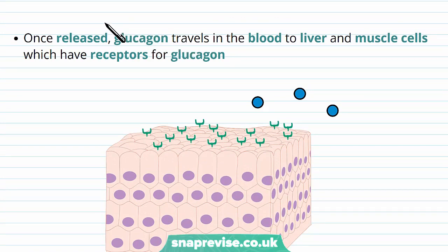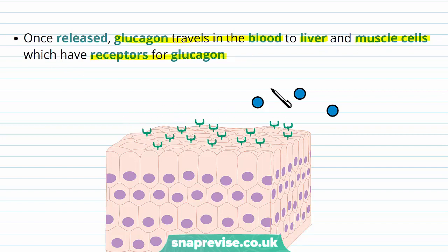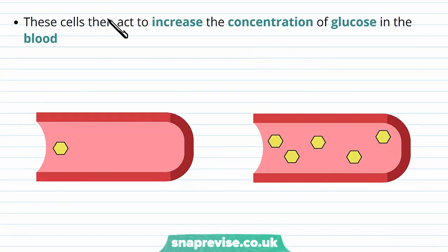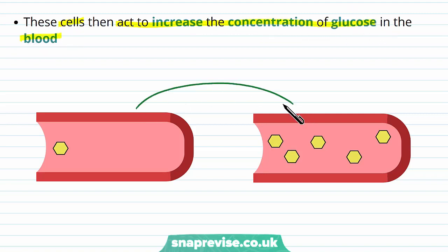Because the pancreas islets of Langerhans are endocrine, the glucagon travels in the blood just like insulin did, and it goes specifically to the liver and muscle cells where there are receptors for the glucagon. Insulin acts on many cells of the body, but glucagon can only really act on the liver or muscle, and the cells of these two tissues have receptors in their cell membranes for the glucagon to act upon. When the glucagon binds, these cells work in various ways to increase the concentration of glucose in the blood and therefore bring it back to a normal level.